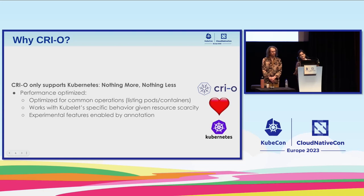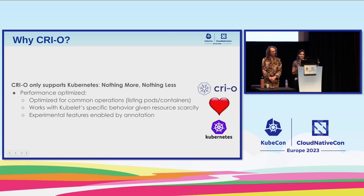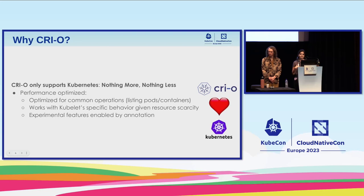So why CRI-O? One of the biggest things is that CRI-O is made specifically for Kubernetes — it only works with Kubernetes, and our focus is Kubernetes. If you try to plug CRI-O into any other container orchestration tool, it's probably not going to work. We optimize CRI-O's performance based on upcoming Kubernetes features, and you can enable experimental features with annotations. We track upstream Kubernetes very closely, and if something new is coming we try to get it into CRI-O first.